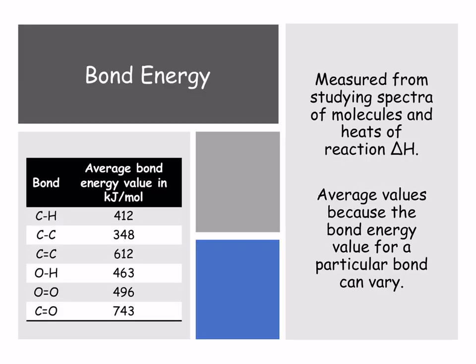If we look at bond energy, on the left-hand side there are various examples of different bond energies — the average energy required to break a given bond. As you can imagine, the carbonyl, the C double bond O down the bottom left, has the highest bond energy. They obtain these values by studying various spectra of molecules and the heats of reaction, also known as delta H.